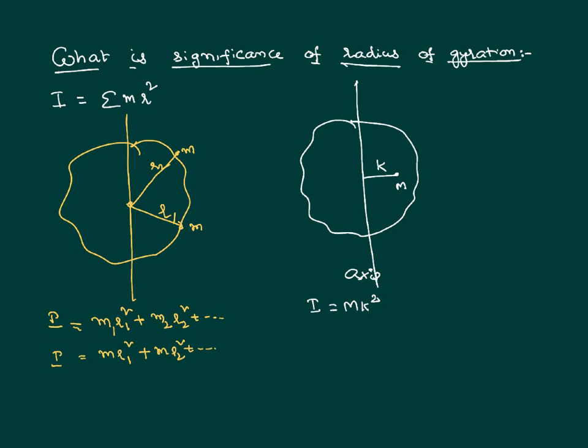So the radius of gyration is identified by finding a point in the body where the total mass appears to be concentrated. The distance of that particular point from the axis of rotation is called the radius of gyration. We can write the radius of gyration as the effective distance of all the particles of the body from the axis of rotation. Equating both expressions: m·r₁² + m·r₂² + ... = M·k², where capital M is the total mass of the body, small m is the mass of individual particles, and n is the number of particles.